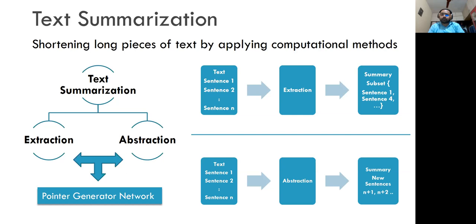So on n sentences, you apply the extraction technique, and the output will be a subset of those n sentences chosen based on their ranking. At the bottom, you have abstractive summarization technique. Here also you have n sentences, but instead of extraction, abstraction is applied. Instead of picking high-ranking sentences, it goes on to generate new sentences which are not present in the original n sentence set.